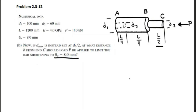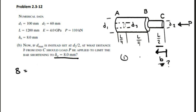Now on to part B. This time they've told us what D3 is, and they want to know the distance B from point C. So we're going from C some distance B over, and we want to know what distance can be applied such that the shortening is only 8 millimeters. Similar setup as before — we have 8, and we're going to add up the different chunks: sections 1, 2, and this time section 3 has an unknown length. So that's our unknown this time.